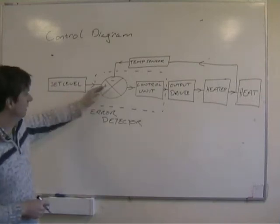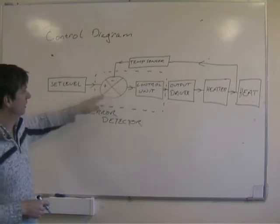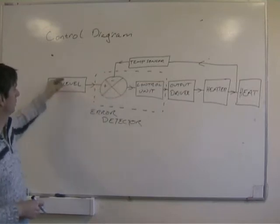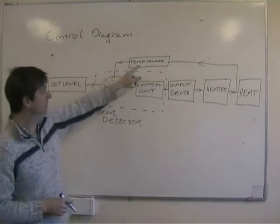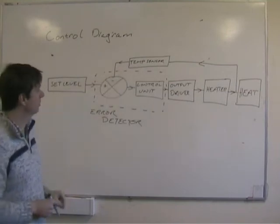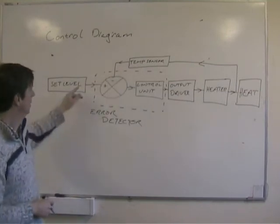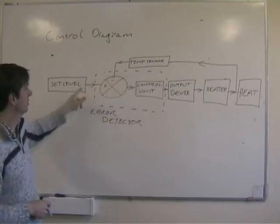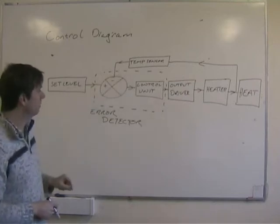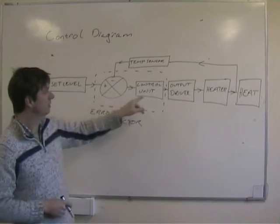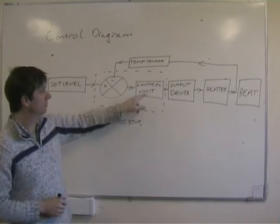That's then fed into an error detector, this is the error detector here, where the level you want is compared with the level from a temperature sensor in the room. If there's a difference between these two, the difference is called the error, and the error will activate the control unit.